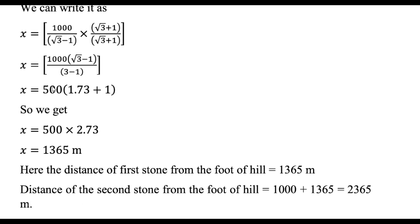After that, you will get that x is equal to 1000 divided by root 3 minus 1. After a little bit simplification, you will get the value of x that comes to 1365 meters.